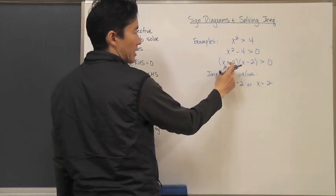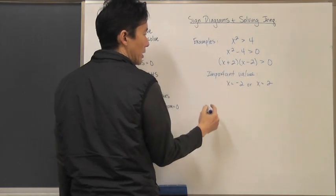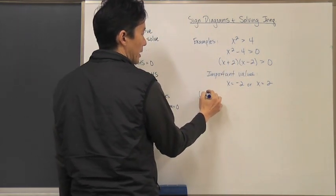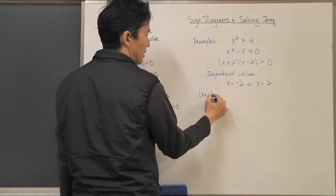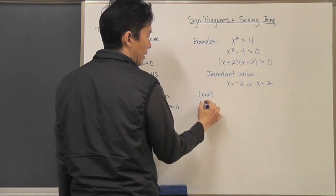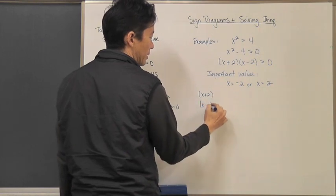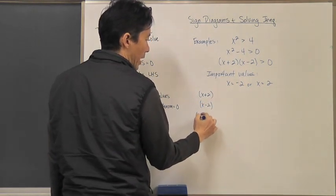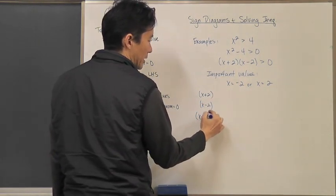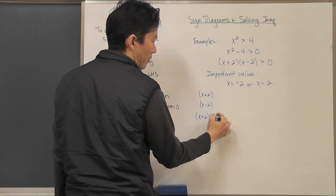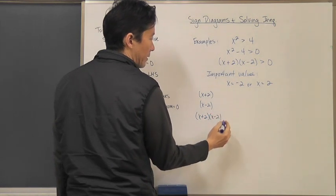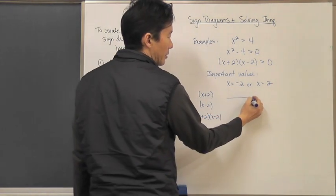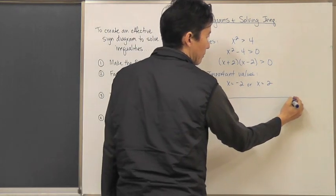I'm actually going to take a look at each one of these factors separately — I'm going to look at x plus 2 and x minus 2, and then I'm going to look at what happens when I take these two and multiply them together. I'm going to use a number line for each of these.